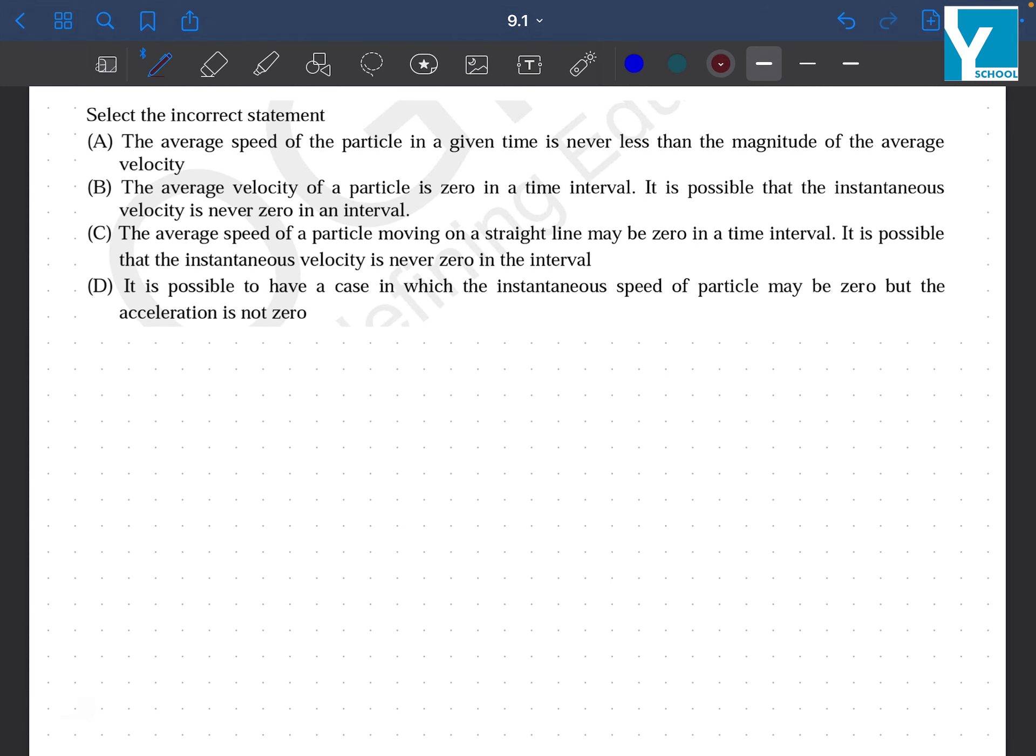Select the incorrect statement. The average speed of a particle in a given time is never less than the magnitude of the average velocity. We want an incorrect statement. Let's write correct and incorrect first. So average speed is never less than average velocity. This is true.